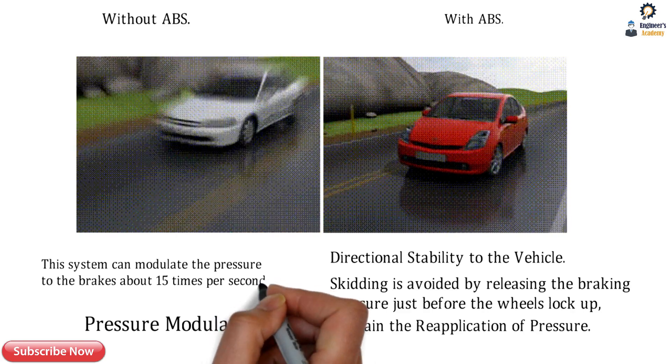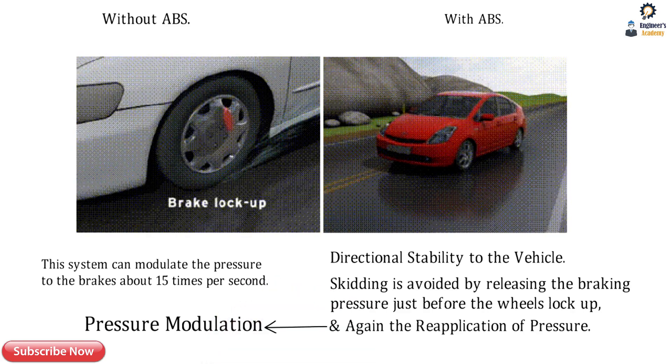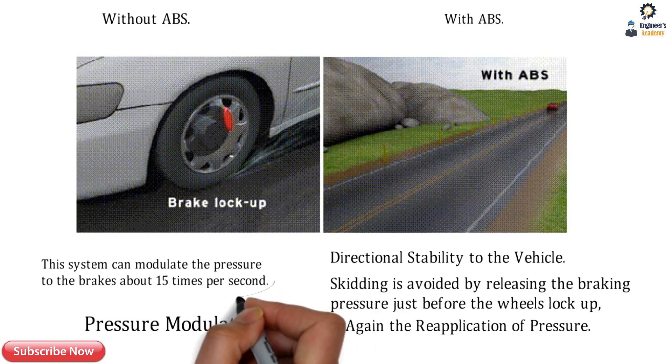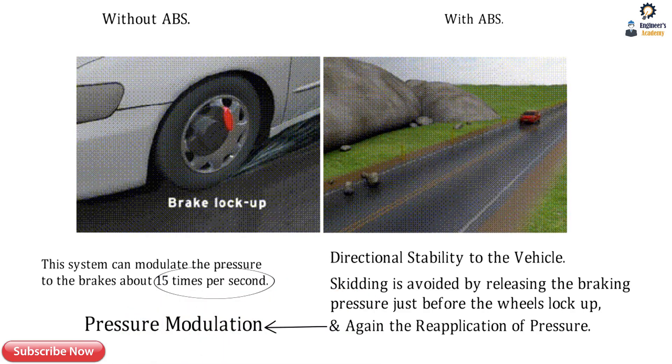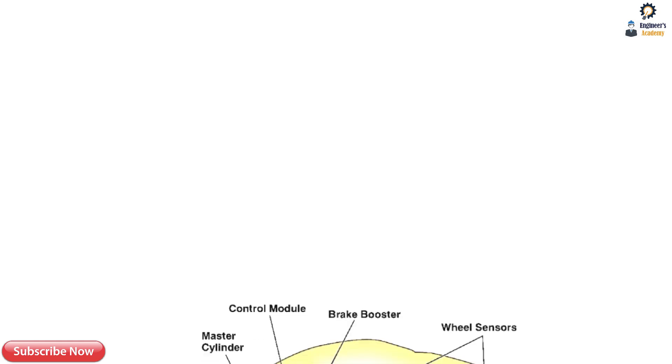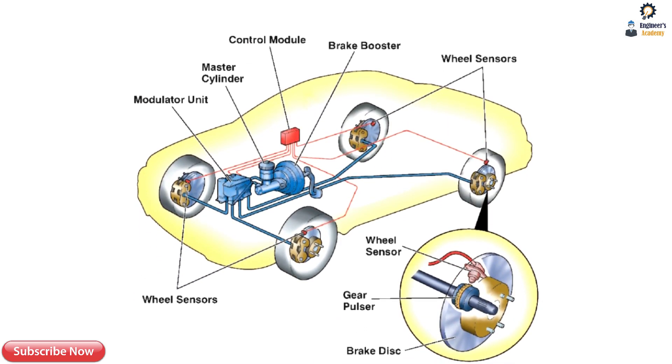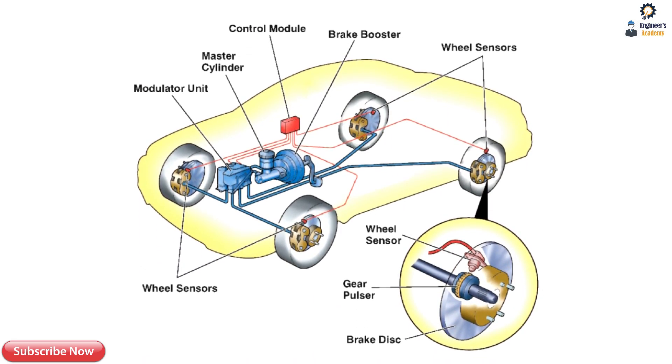The ABS system can modulate the pressure to the brakes about 15 times per second, which is very high. Now let's check out the ABS system, its parts and components.